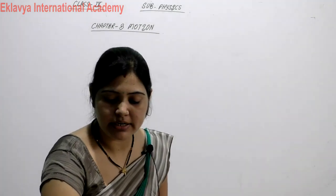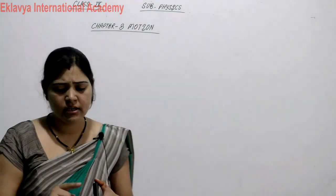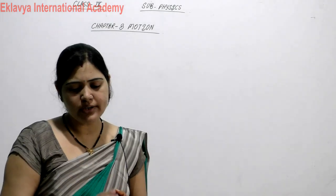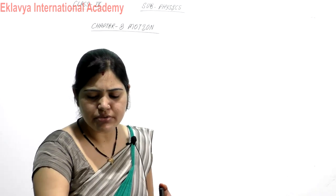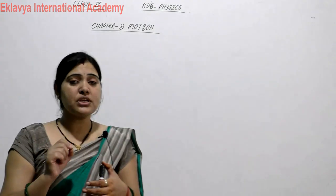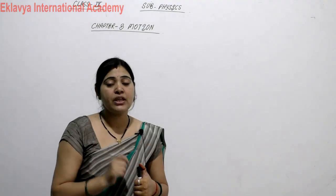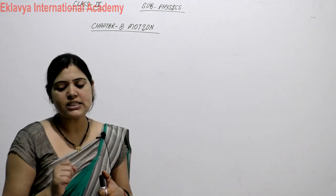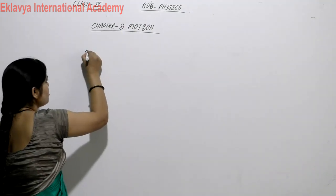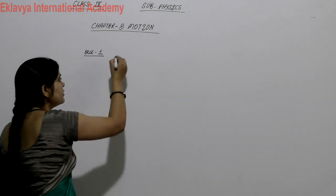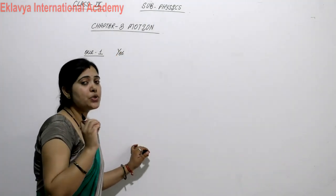Question 1: An object has moved through a distance — can it have zero displacement? Yes or no? If yes, then explain the condition. The answer is yes, displacement can be zero.